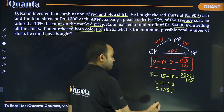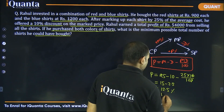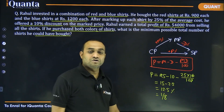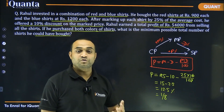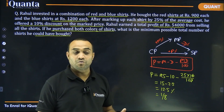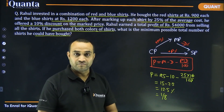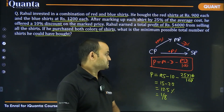So 12.5% is nothing but 1/8. This means the total profit is 1/8th of the total cost price.